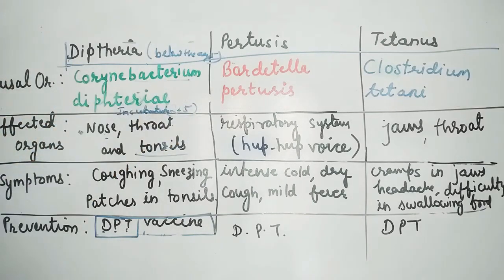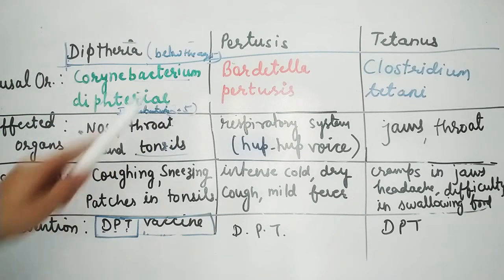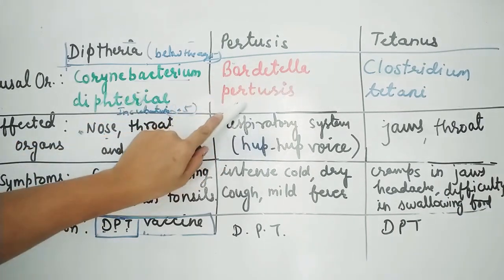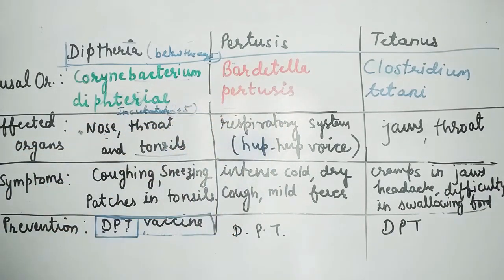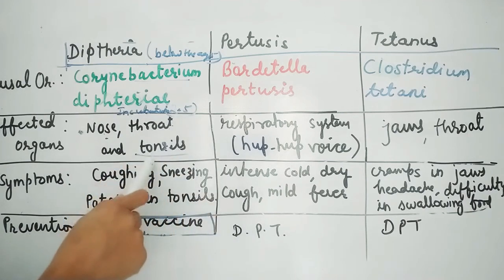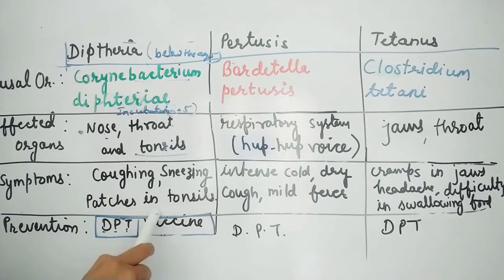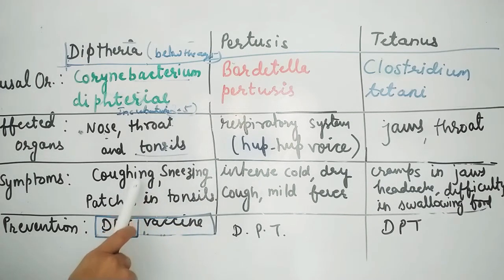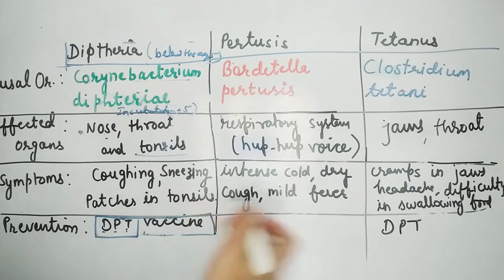The next disease is Pertussis. The causal organism is Bordetella pertussis. This affects the respiratory system. Coughing and sneezing are present, and mainly there are patches in the tonsils. In diphtheria there is a mucous cough, while in pertussis there is a dry cough.